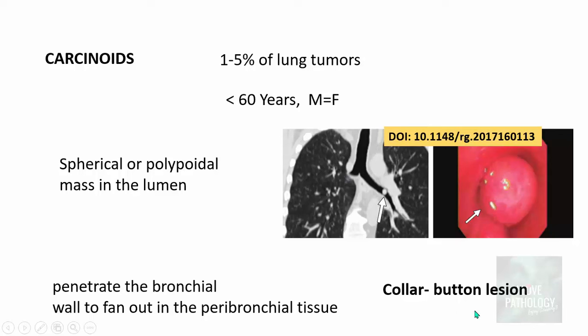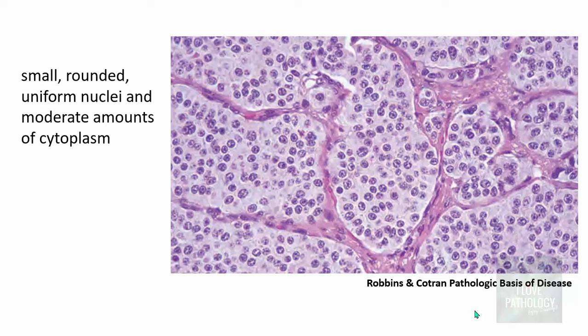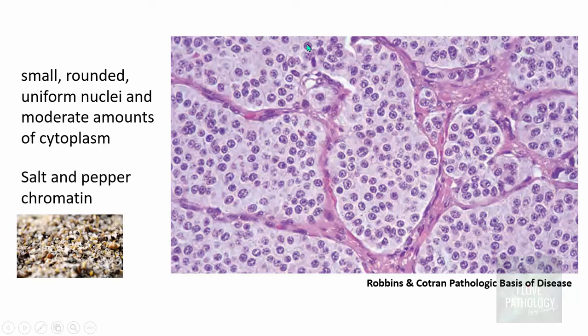This is a microscopic image from Robbins textbook showing carcinoids. They are composed of small, rounded, uniform cells with regular round nuclei, moderate cytoplasm, and characteristic salt-and-pepper chromatin. When these features of regularity and uniformity are present, they are called typical carcinoids. When the cells are pleomorphic with high mitotic activity and deviate from these features, they are called atypical carcinoids.